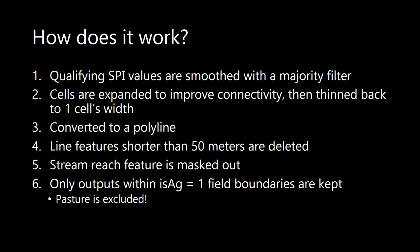While the tool is running, here's how it actually works. First it takes qualifying SPI values — any value greater than the standard deviation threshold — and that is smoothed with a majority filter. Whatever is remaining, those cells are then expanded to improve overall connectivity, and then thinned back down to one cell's width. Those remaining lines are then converted to a polyline feature. Line features shorter than 50 meters are deleted for practical purposes. A stream reach feature is masked out to make sure we don't have a very long grass waterway sited all the way through the channel. Finally, only outputs within fields with an 'is equals one' field boundary are kept — pasture is excluded.